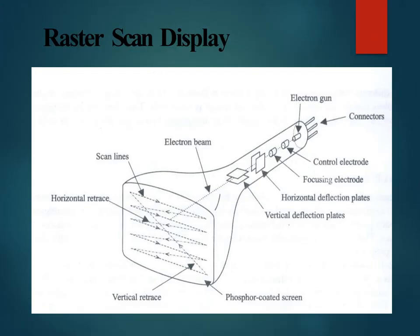This is a diagram of a raster scan display implemented using a cathode ray tube. The electron gun emits a beam of electrons, which then passes through a focusing and deflection system and is directed toward a specified position on the phosphor-coated screen. When the beam hits the screen, the phosphor emits a small spot of light at each position contacted by the electron beam.